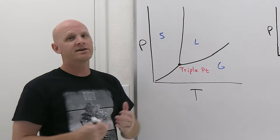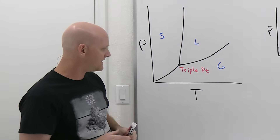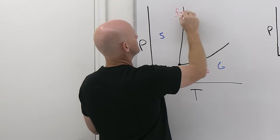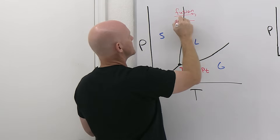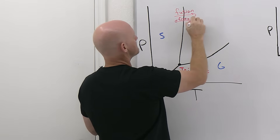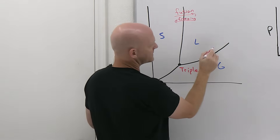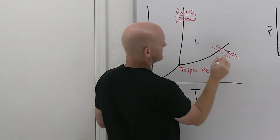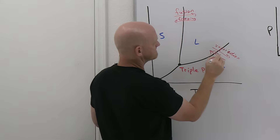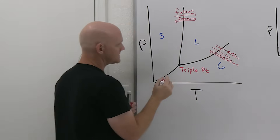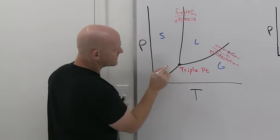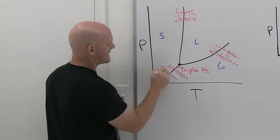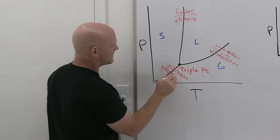You should be able to identify phase changes on here. Going from solid to liquid is fusion, and going back from liquid to solid is crystallization or freezing. Between liquid and gas: liquid to gas is vaporization, and gas back to liquid is condensation. Between solid and gas — the ones students are most likely to forget — going from solid to gas is sublimation, and from gas back to solid is deposition.